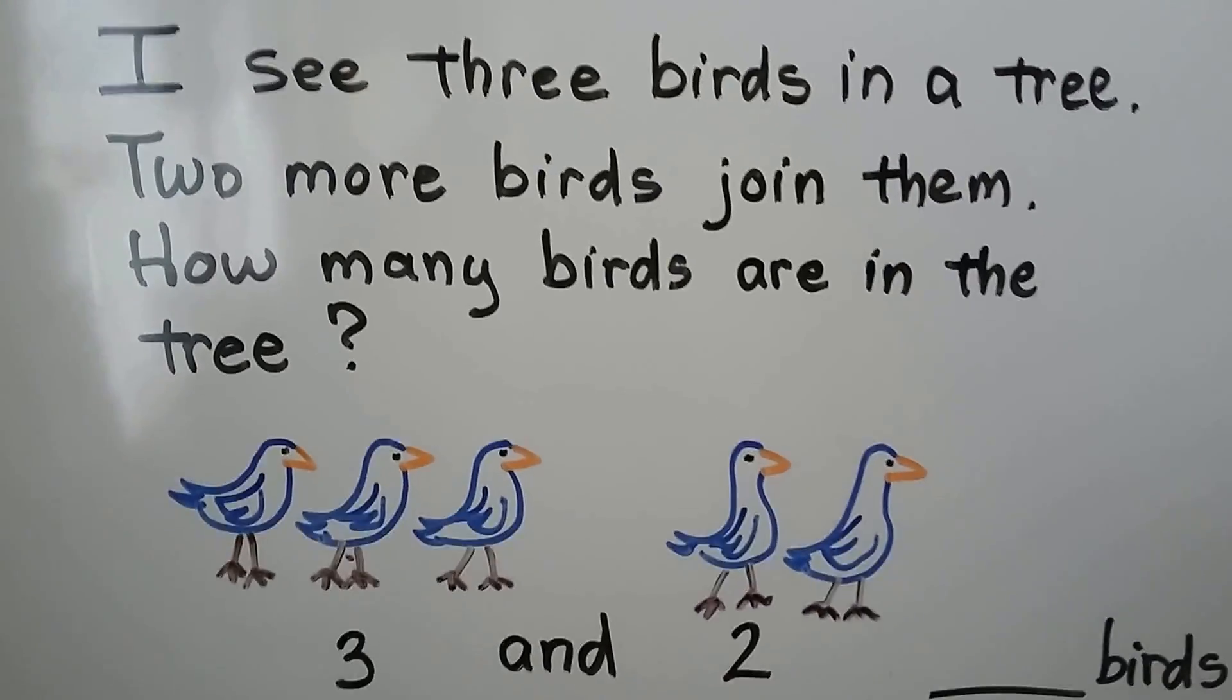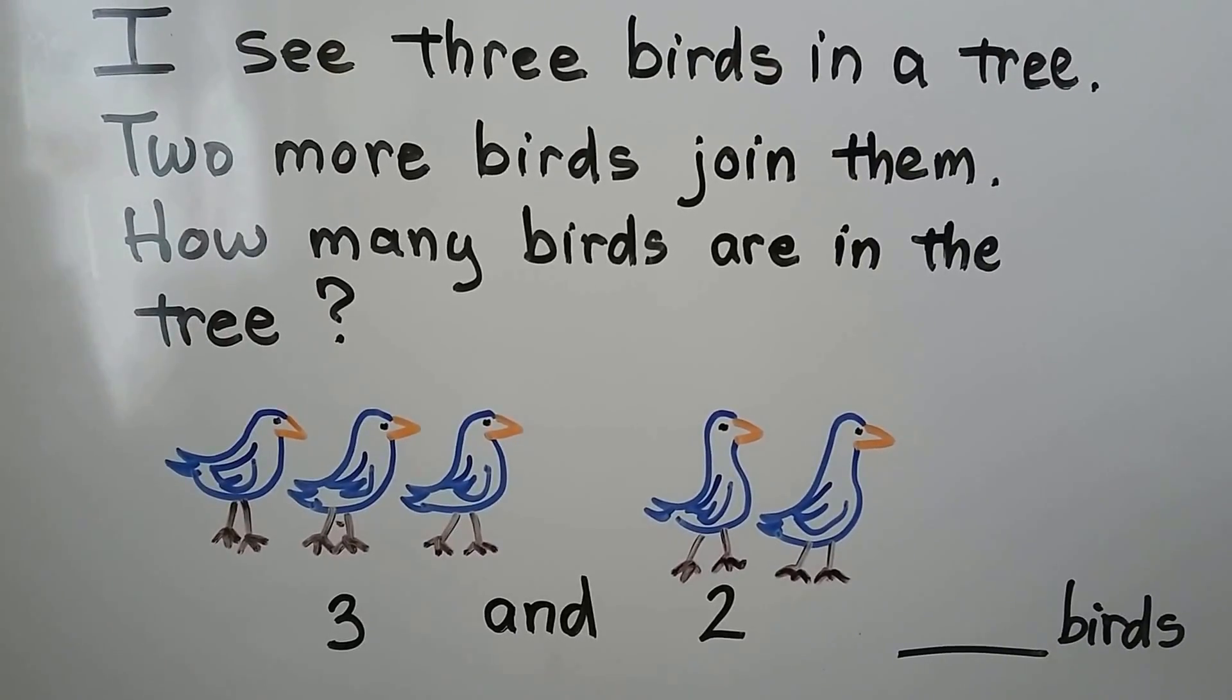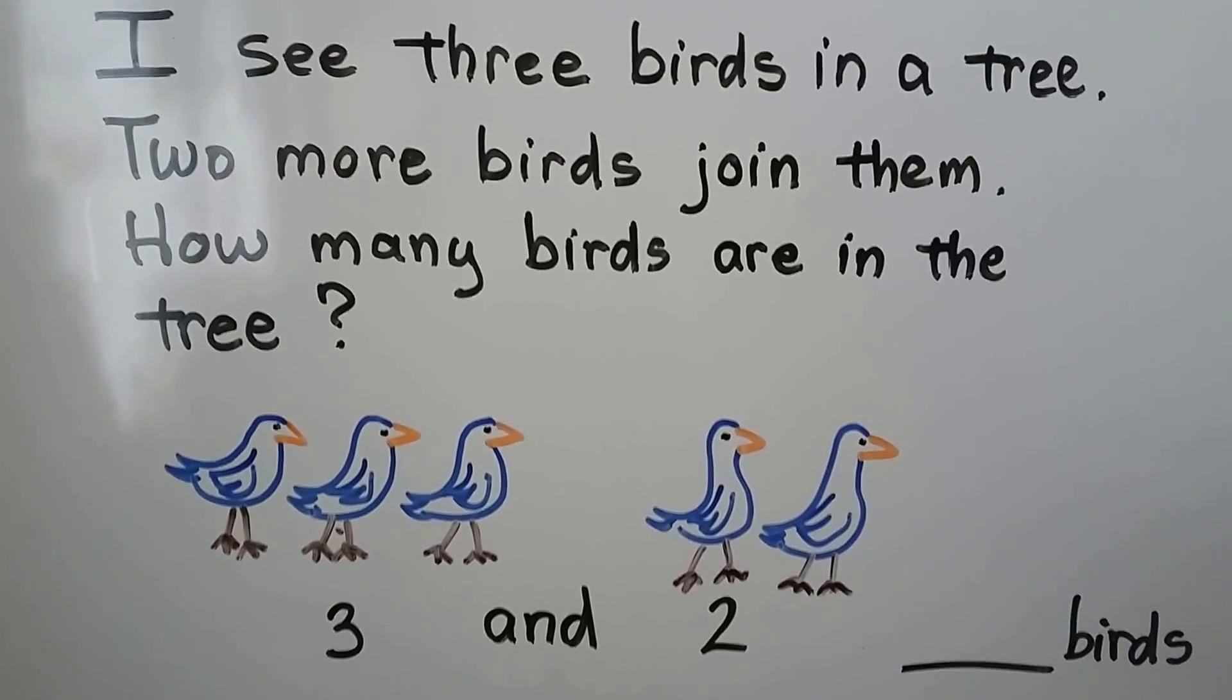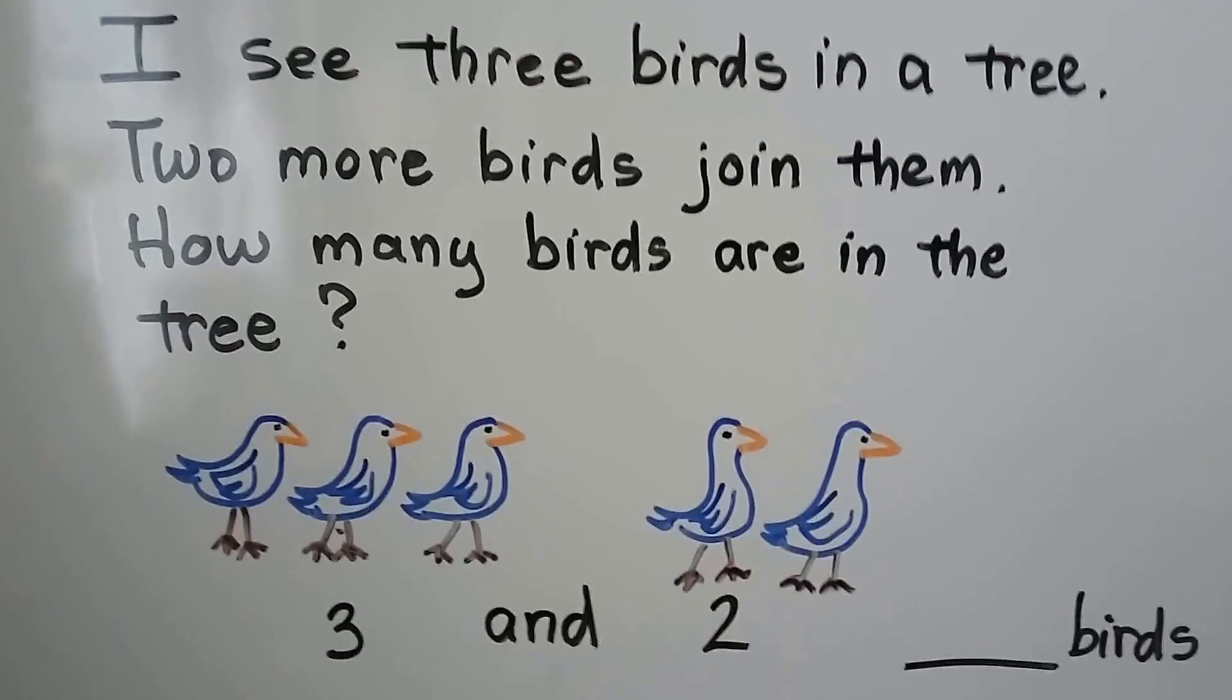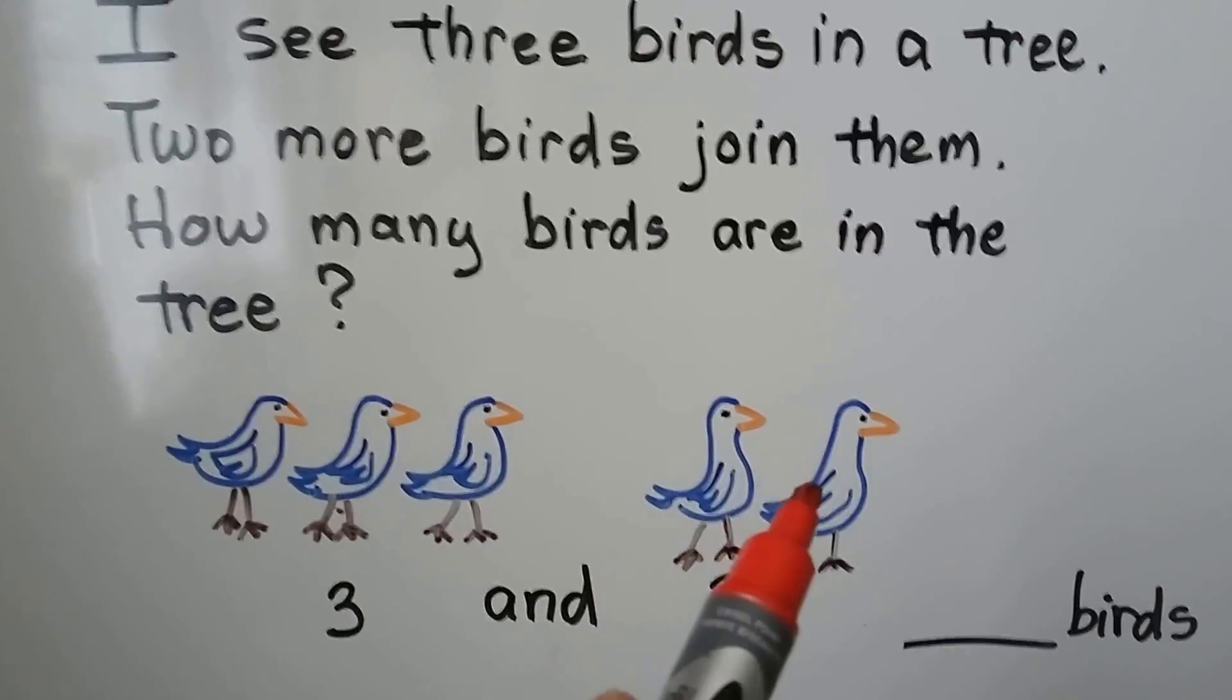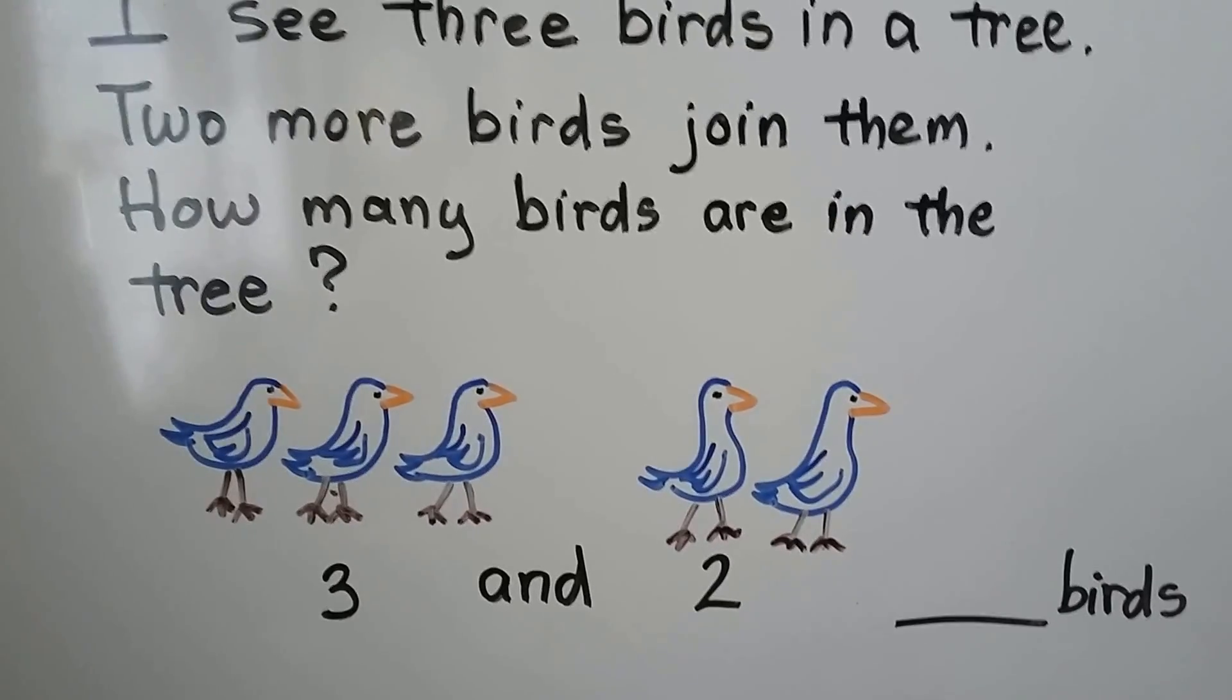Here we have a problem. It says, I see three birds in a tree. Two more birds join them. How many birds are in the tree? We can draw these birds. We can draw three birds and then we can draw two more that join them, and then count them to see how many birds there are in all.